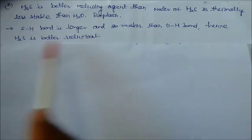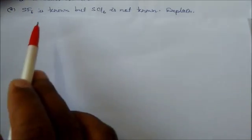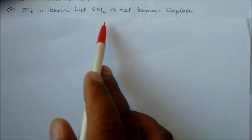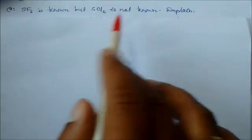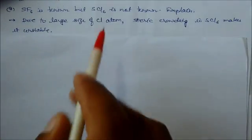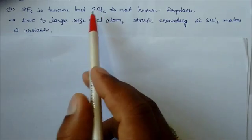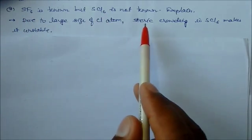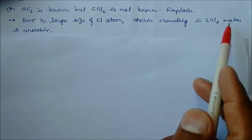SF6 is known but SCl6 is not known. Why? Due to the larger size of the chlorine atom compared to fluorine, and steric crowding in SCl6 makes it unstable.